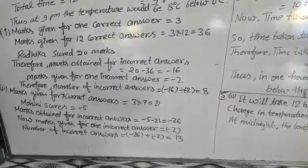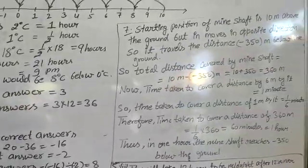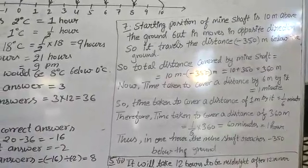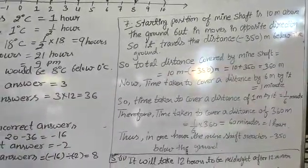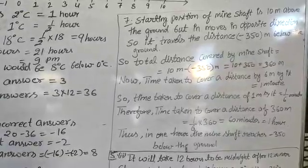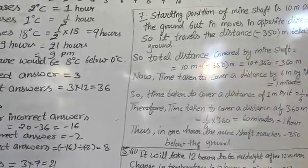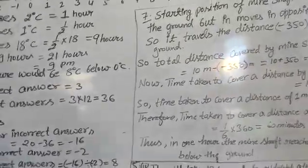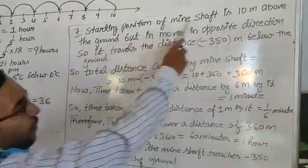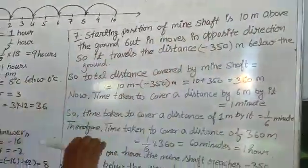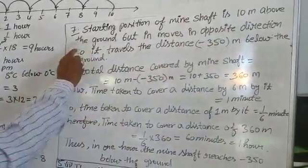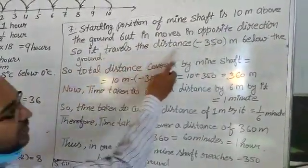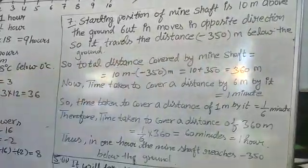Question number 7: An elevator descends into a mine shaft at the rate of 6 meters per minute. If the descent starts from 10 meters above the ground level, how long will it take to reach minus 350 meters below the ground? The starting position is 10 meters above ground. It moves in the opposite direction, so it travels to minus 350 meters below ground.